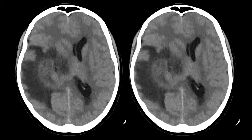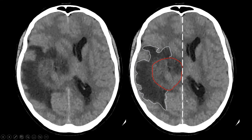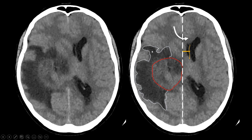Here is an example: a patient who presented at the ER with headache, decreased level of consciousness, and neurological deficits. On non-enhanced CT we see an isodense brain tumour in the right thalamus surrounded by oedema. Drawing a line along the falx cerebri, the septum pellucidum, normally at the midline, has deviated to the left — a midline shift with sub-falcine herniation. Always report your midline shift and the presence of sub-falcine herniation.